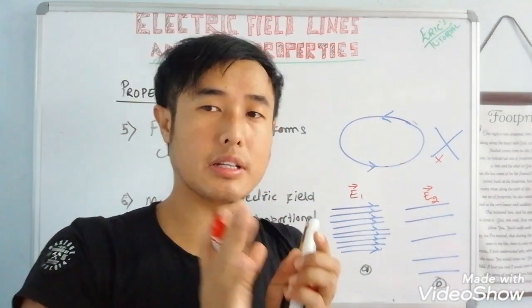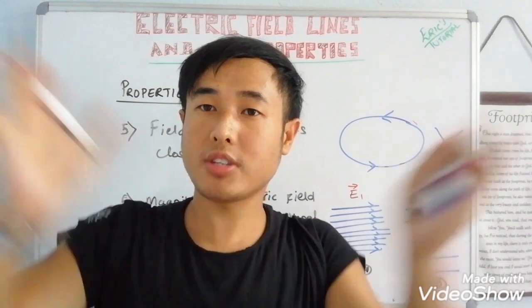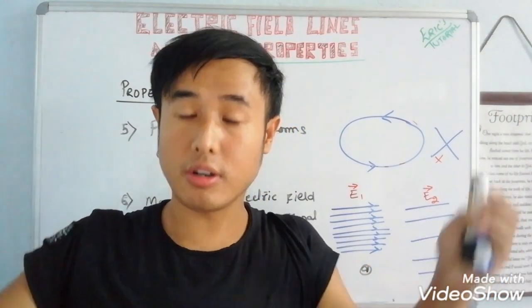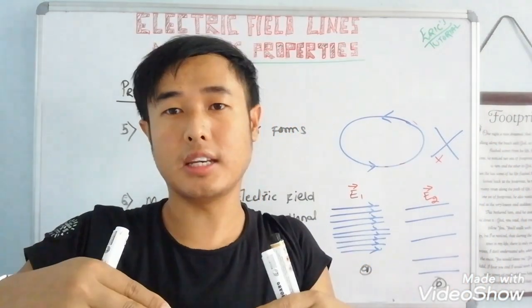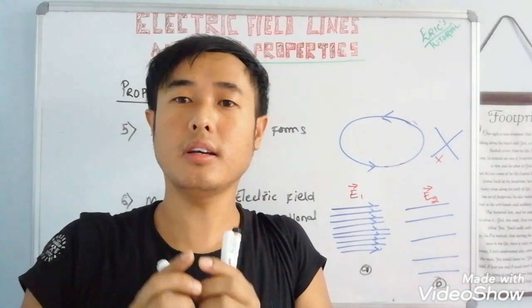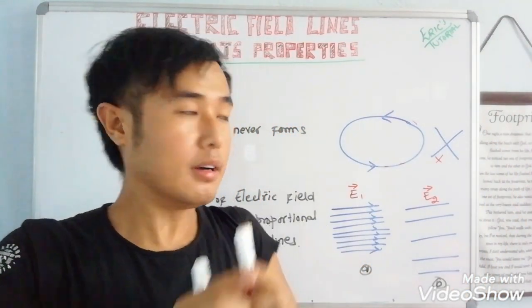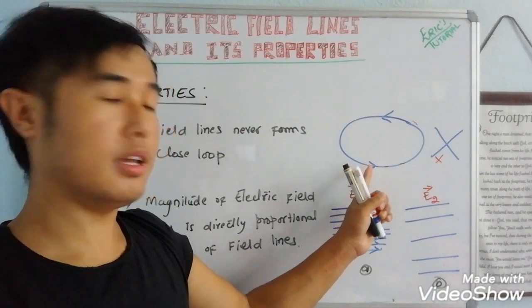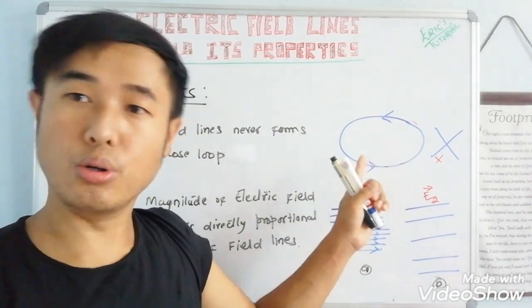Field lines start from positive charge and come to negative charge. They will never form closed loops.